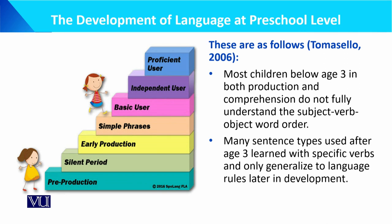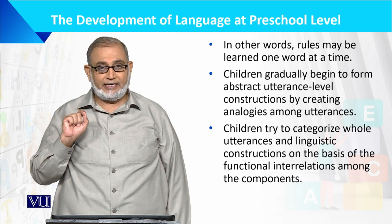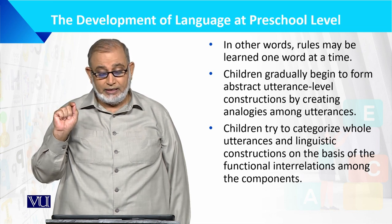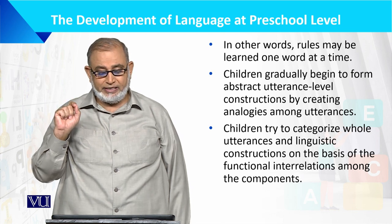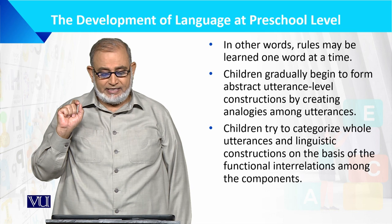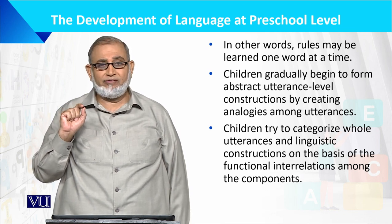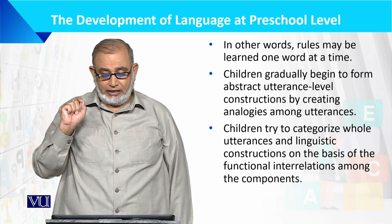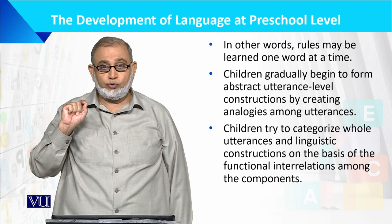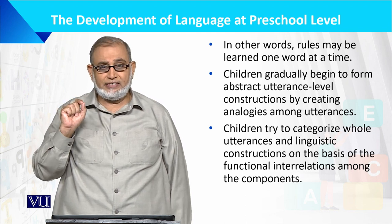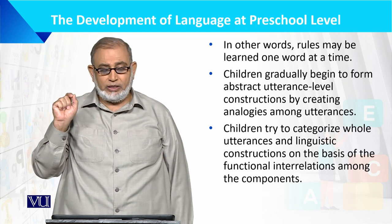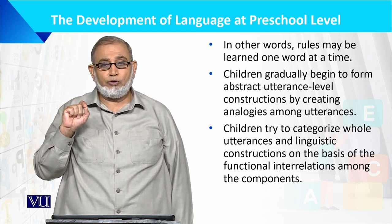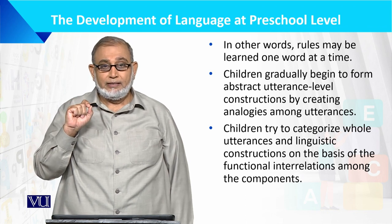In other words, the rules may be learned one word at a time. When the stage of words production begins after sounds, children speak one word at a time, and gradually begin to form abstract utterance level. This abstract utterance level starts much later, and by creating analogies among utterances — analyzing the sentence structures and words, and combining them.